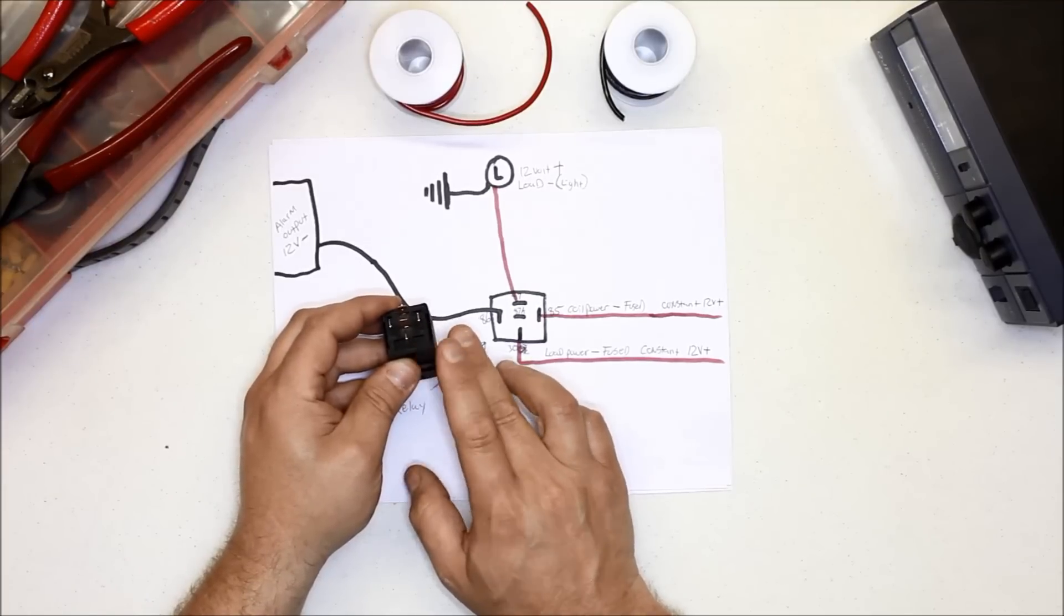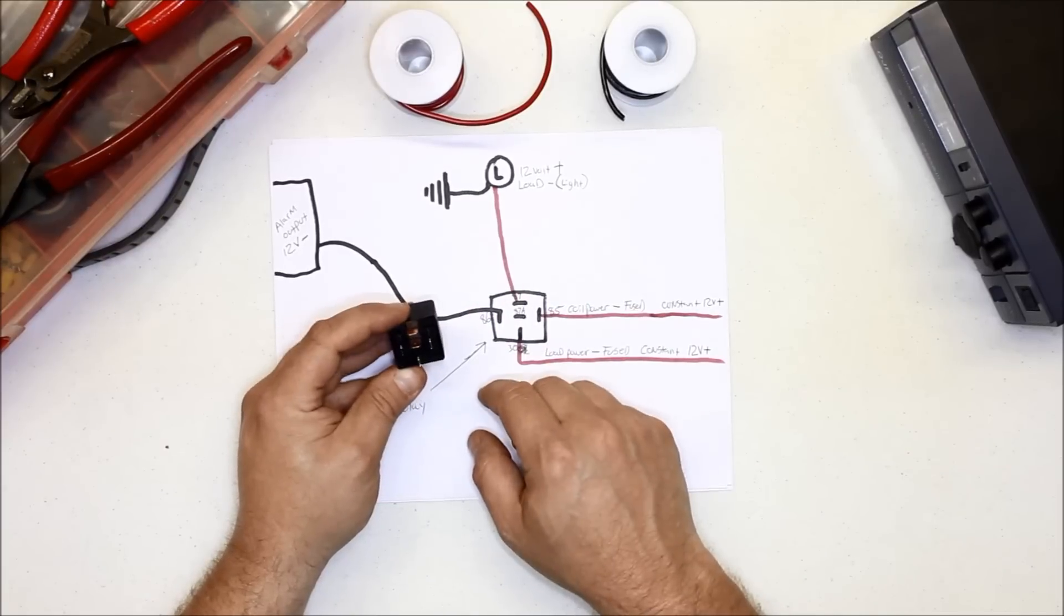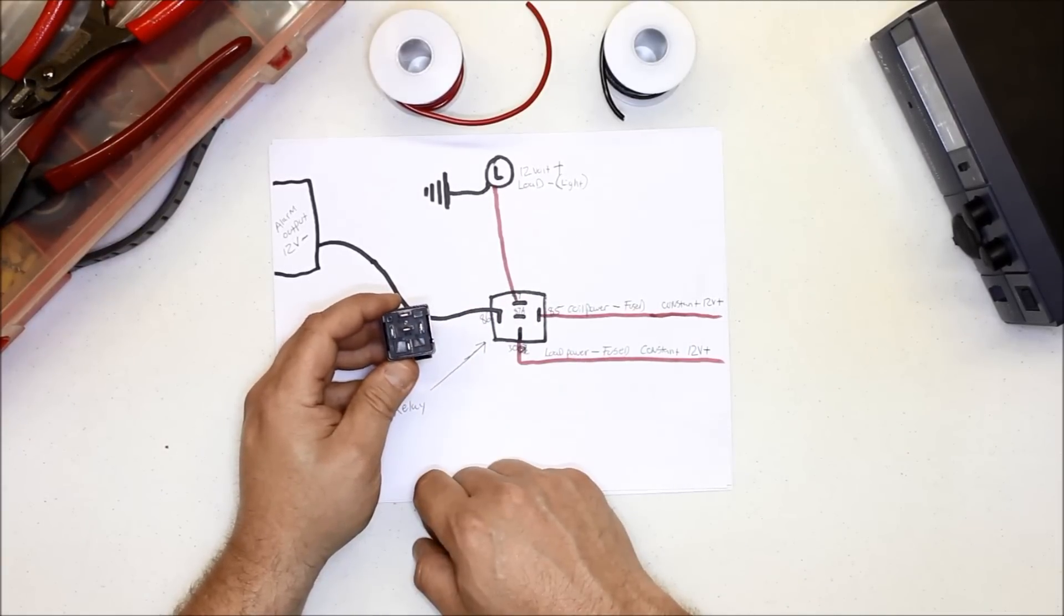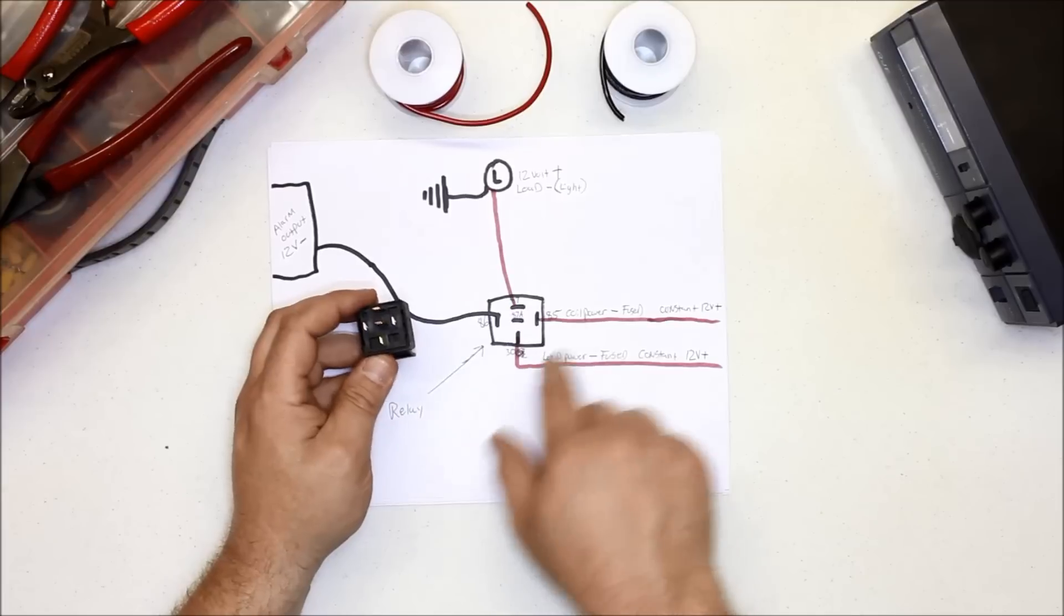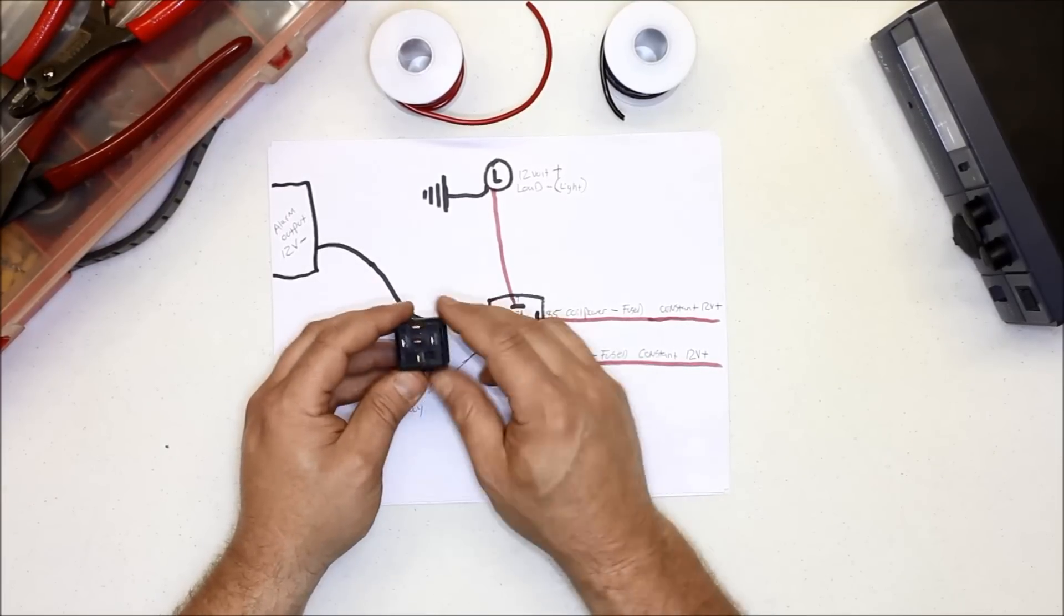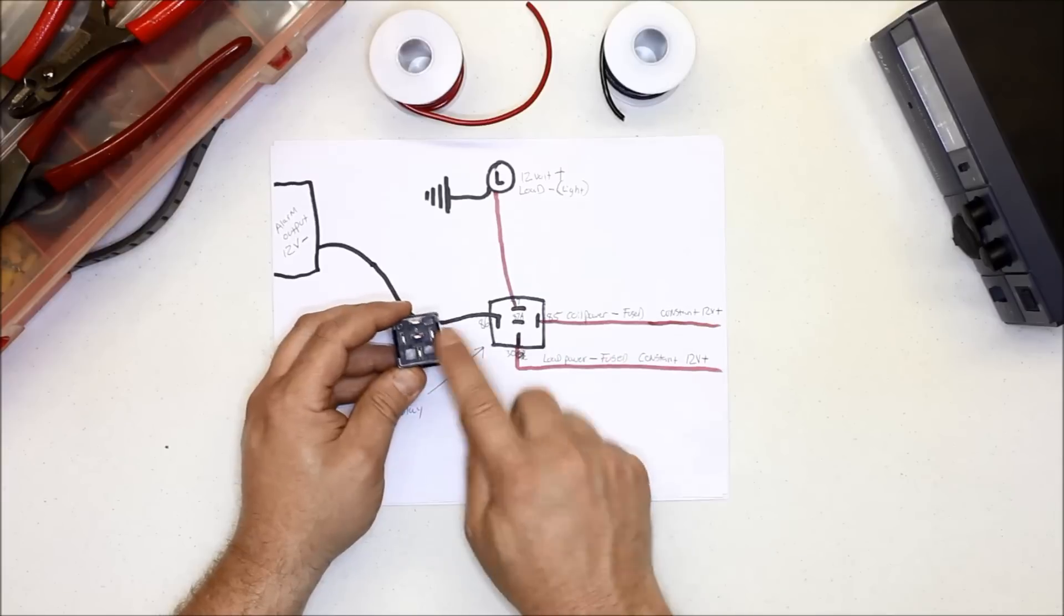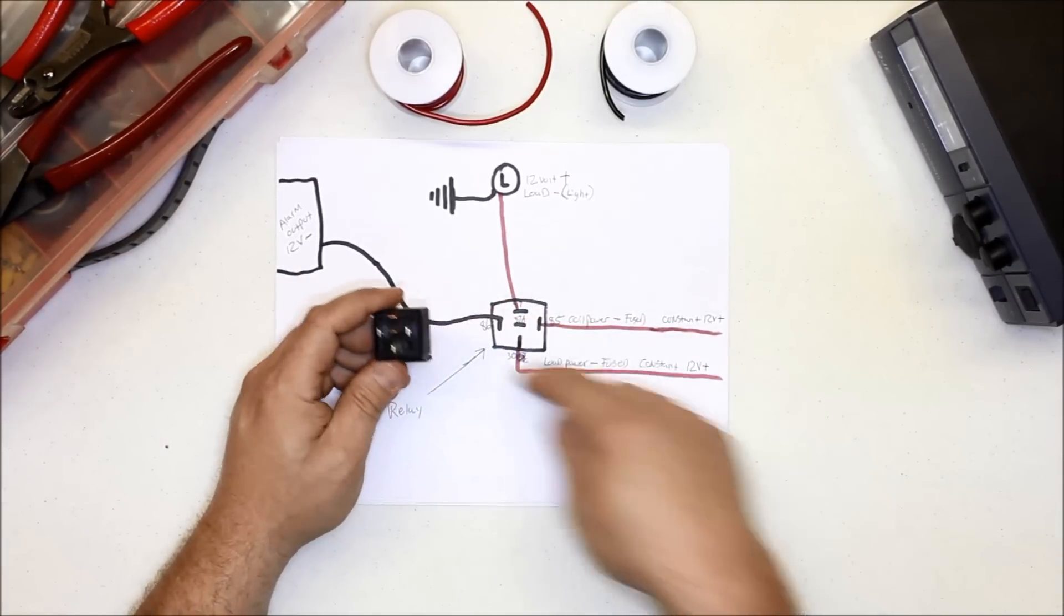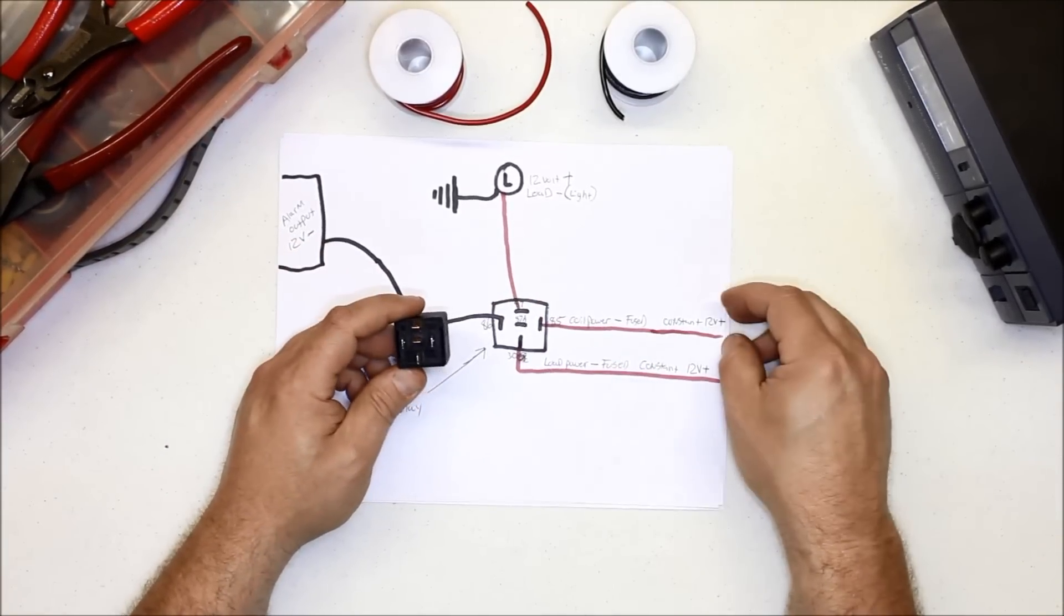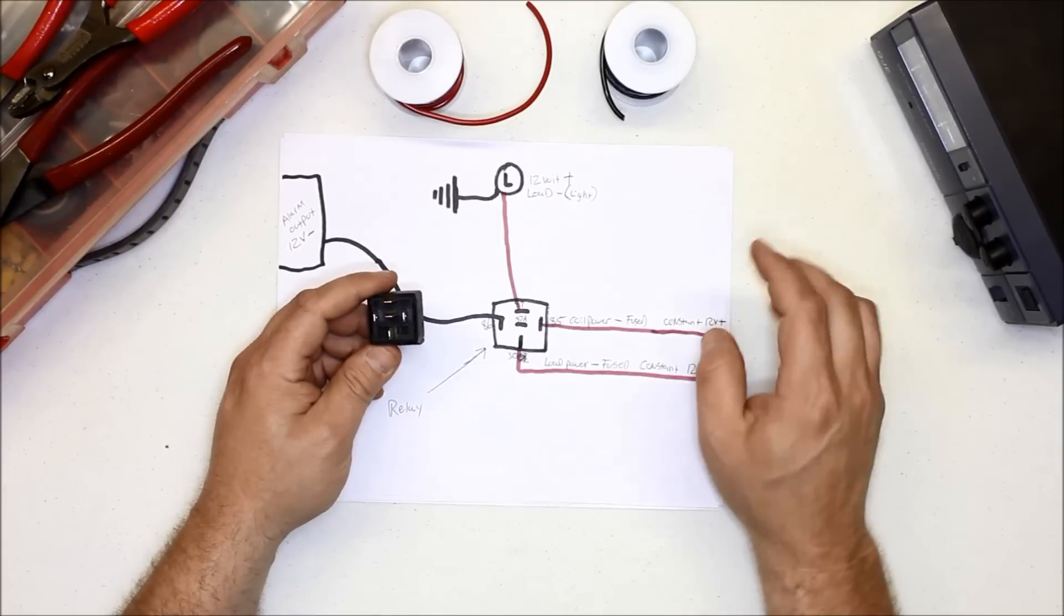But it would be wired differently. You wouldn't use the same scenario. You would just use a constant negative, and then your toggle switch on the dash—you would switch the positive instead of using the negative to switch it like in this one.